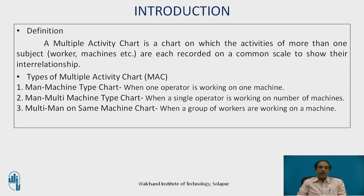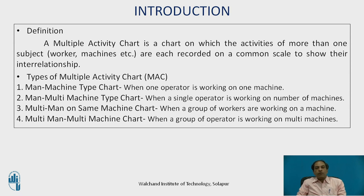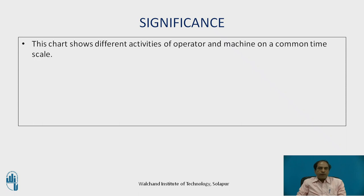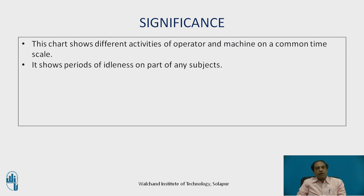The multi-man same-machine chart applies when a group of workers operate a single machine simultaneously — common in large planning machines or big presses where two to four operators at different locations all operate the machine together. There is also a multi-man multi-machine chart, where a group of operators works on multiple machines, commonly observed in a group layout or fixed-position layout.